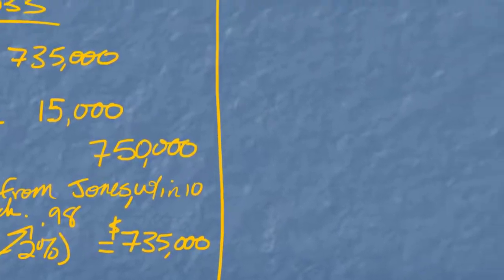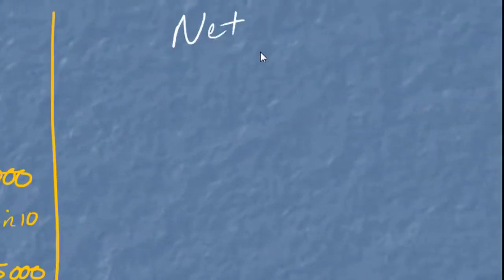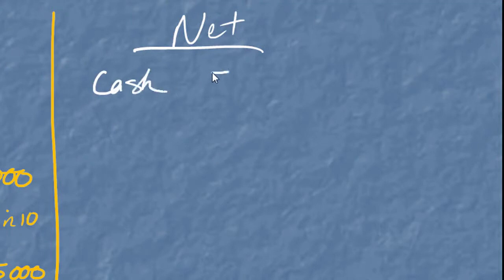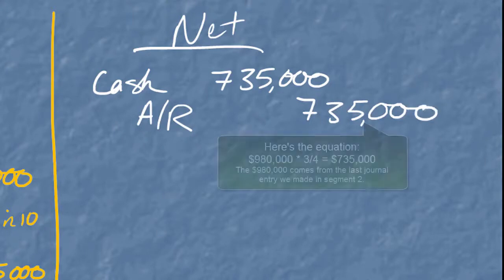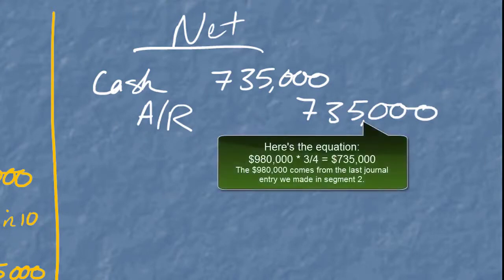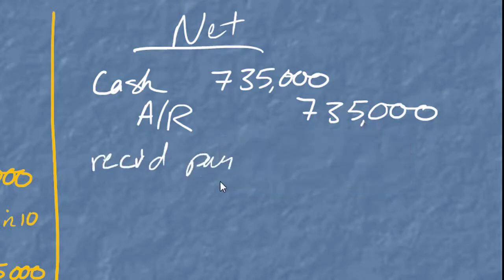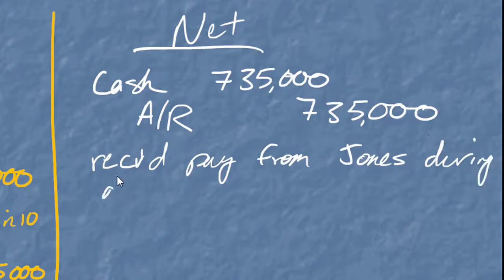Now let's switch gears and do it for the net method. And in this method, it's much more straightforward. We assumed they were going to get the discount in the first place. So we're still going to get the cash for $735,000. But now I don't need a discount account because I assumed they were going to get that discount in the first place and already put it into account receivable that way. So that's it. That's the journal entry. I don't have to do anything else.